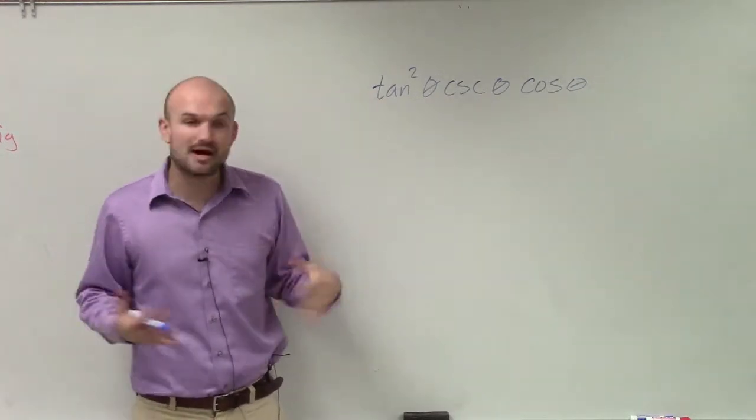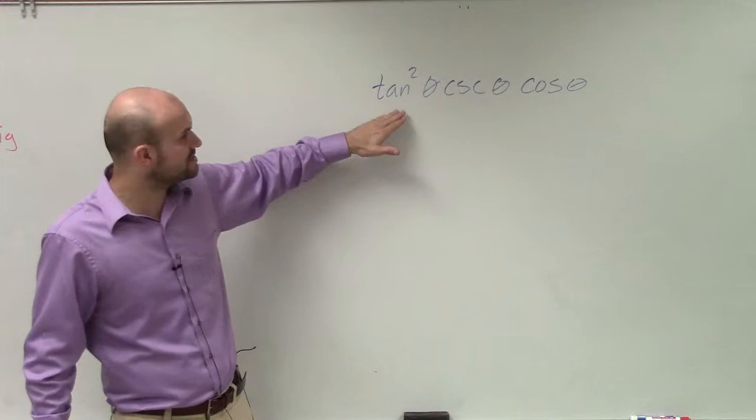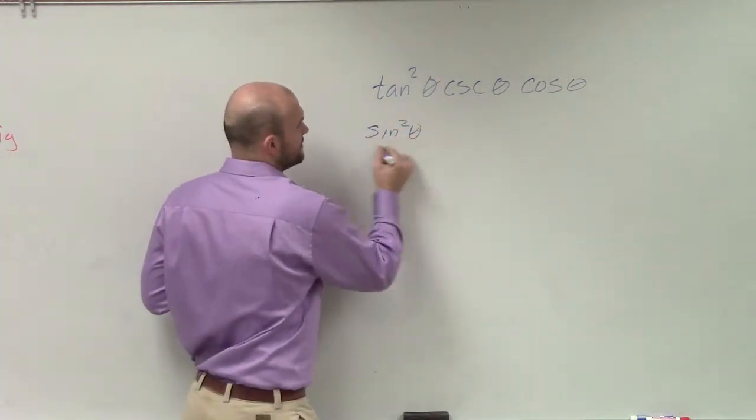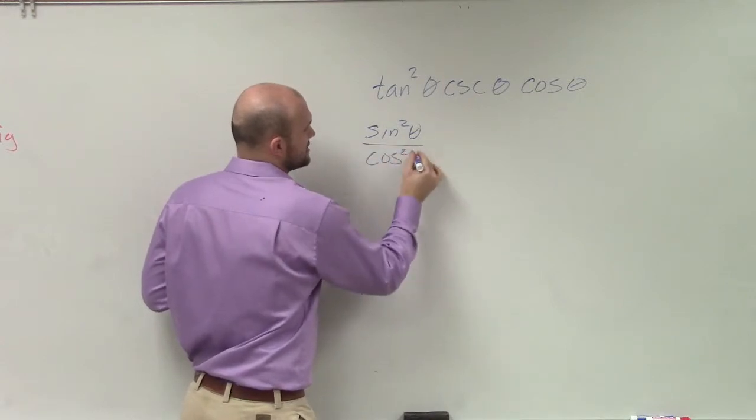Since I've worked through a lot of these problems, I'm going to decide to use the quotient identity. So I'm going to rewrite tangent squared as sine squared theta over cosine squared theta.